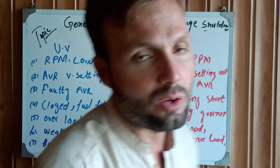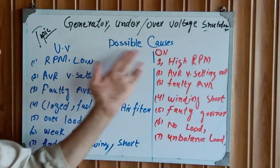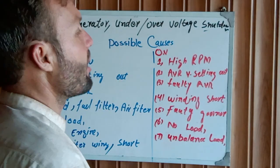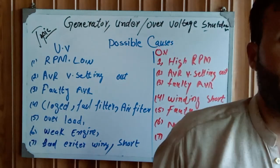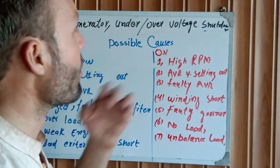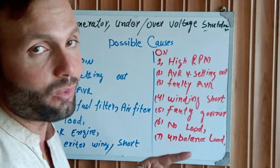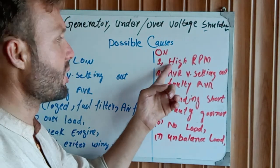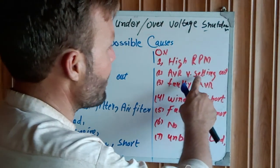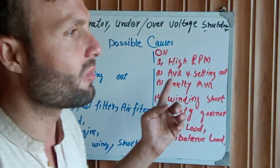Now for the over voltage possible causes. If your generator RPM is high — above the rated RPM — that means your engine is in an over voltage condition. When your RPM is rotating too high, this produces high voltage. Please set the rated RPM according to the engine specification. Also check if the AVR voltage setting is out of range — adjust the voltage setting from the AVR.